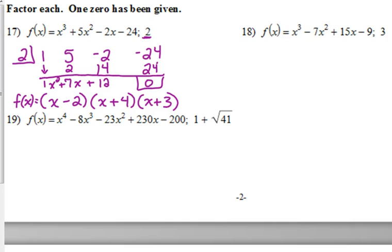Let's look at 18. Same deal. Looks like it's factoring by grouping, but it's not. You could try it, but you're not going to get the same thing in your parentheses. So if they give us one of the zeros, then we need to use synthetic division to reduce this to a quadratic that hopefully we can factor.